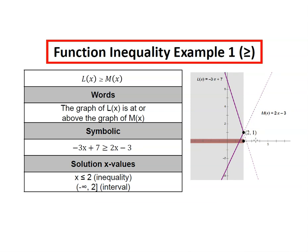When we look at greater than or equal to, the situation is flipped. We say the graph of L(x) is at or above the graph of M(x). And that's to the left of 2. So x less than or equal to 2.